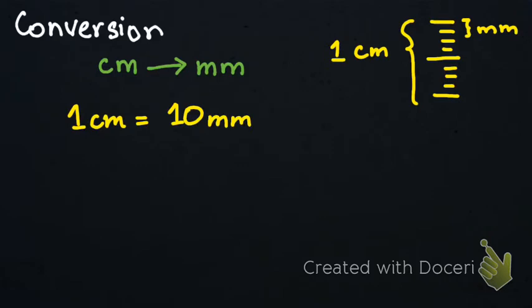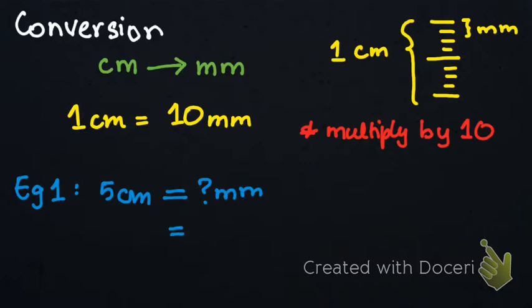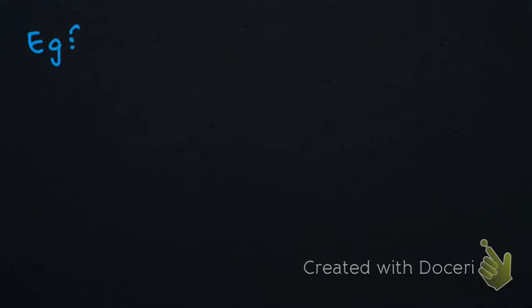By looking at this, we can easily say that when we want to convert centimeters into millimeters, we are simply going to multiply by 10. For example, suppose we have 5 centimeters and we need to convert it into millimeters. We simply multiply by 10, and our answer will be 50 millimeters.